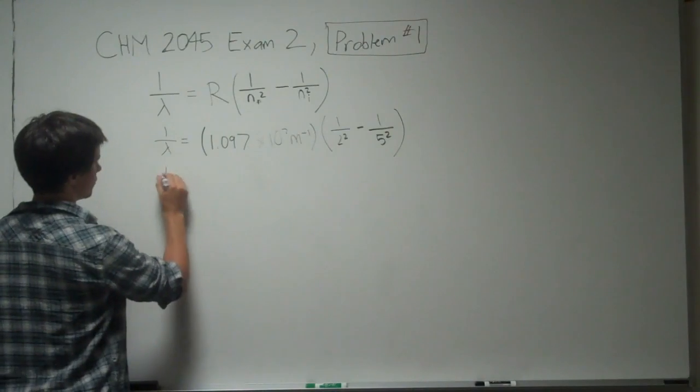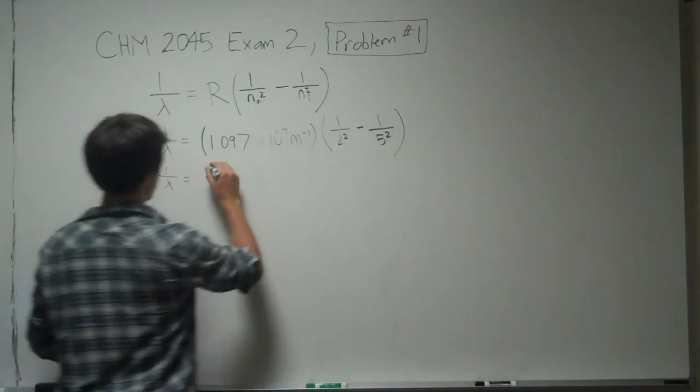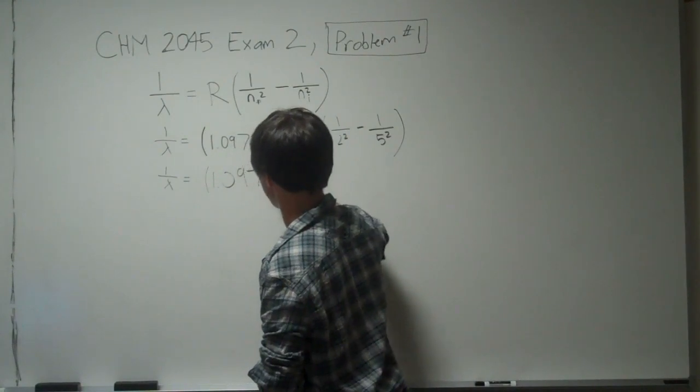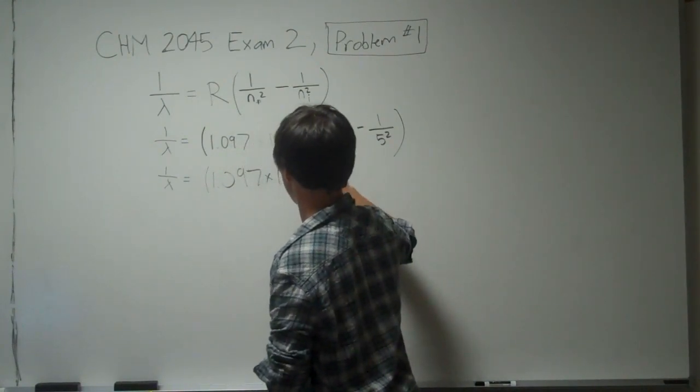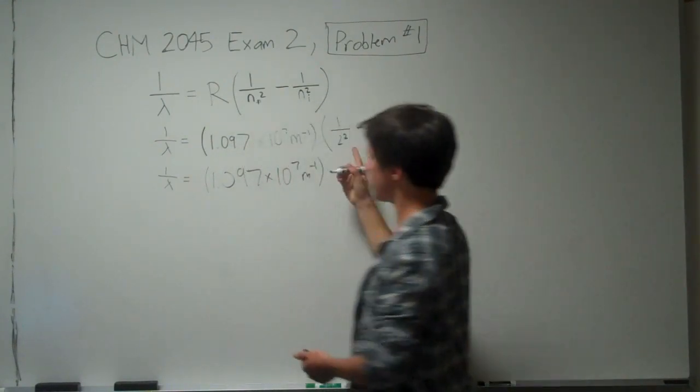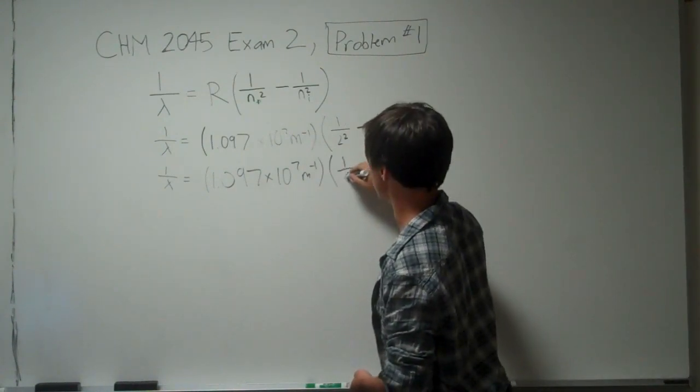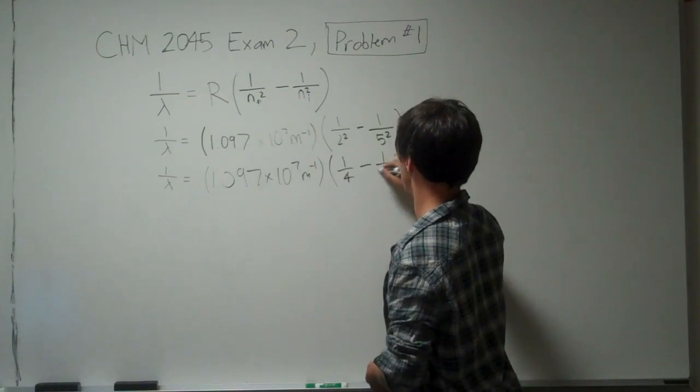The next step would be the same thing, 1 over lambda equals still this constant, 1.097 times 10 to the 7 inverse meters. When we actually do these squares, it's going to be 1 quarter minus 1.25.